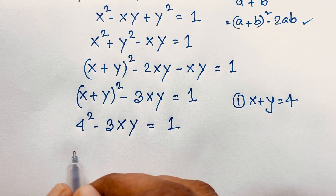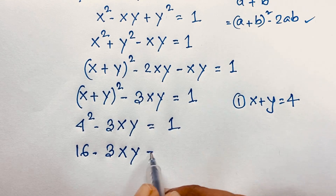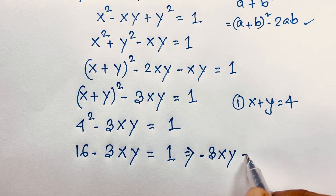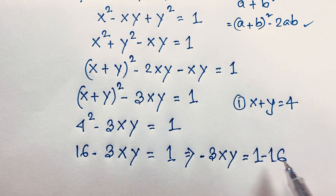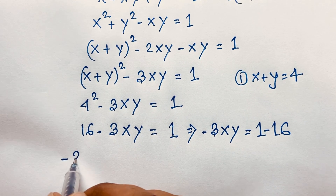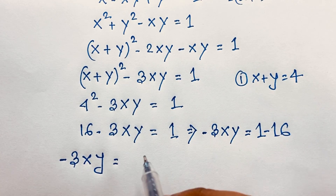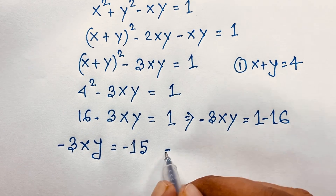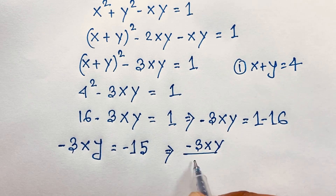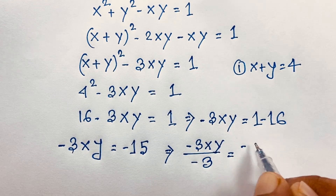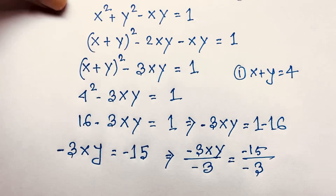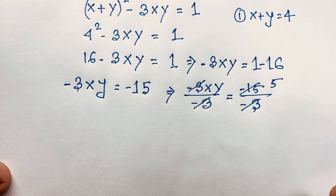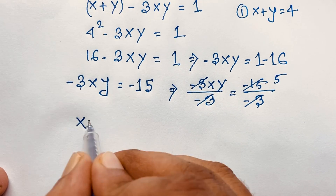Then it will be 16 minus 3xy is equal to 1. Moving 16 to the other side: negative 3xy is equal to 1 minus 16, which is negative 15. Dividing both sides by negative 3, the negatives cancel and we find xy is equal to 5.